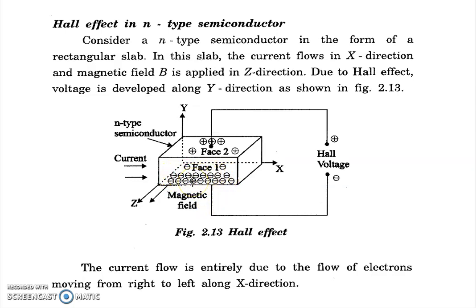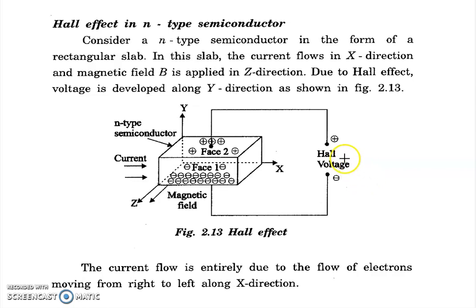In the downward direction, comparing this bottom face (phase one) to the top face (phase two), the charges accumulate. With respect to phase one, the top phase two becomes relatively positive. Measuring between phase one and phase two, you obtain a voltage — that is the Hall voltage. The Hall voltage or Hall field is generated along the negative y direction.